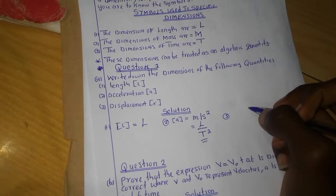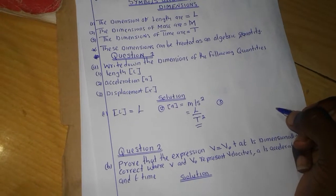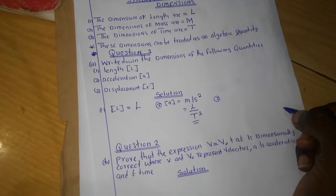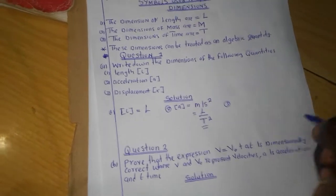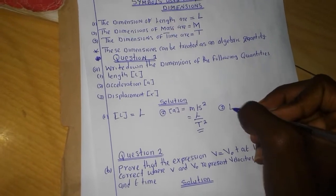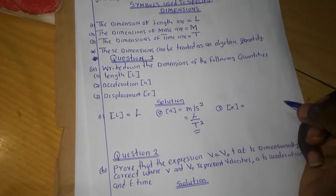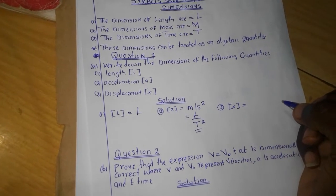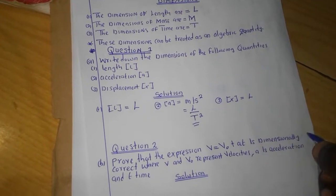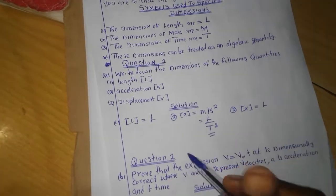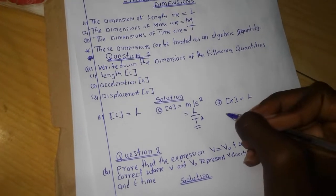We come to displacement. Displacement is simply some length — the distance covered from one particular point to another. The dimensions of displacement are not different from that of length, so we can just write a big letter L.